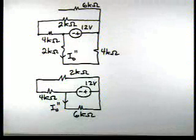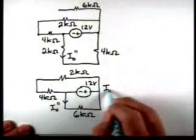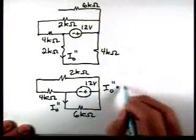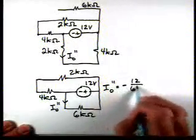And if we look at our circuit, and look at it from the standpoint of Ohm's law, we can see that I0 double prime is going to be minus 12 divided by 6k.